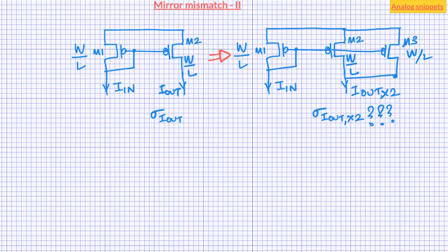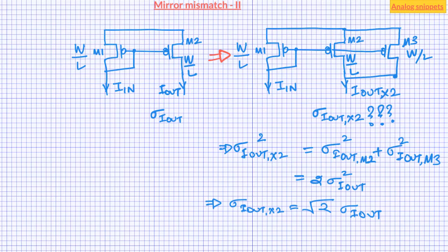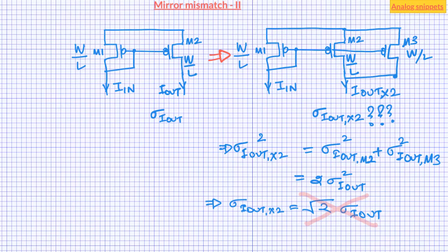When we add two independent random variables their variances add, so from this approach the total spread of the output would be root 2 times the spread of the individual current variation. But unfortunately this answer is incorrect. If we look closely, we realize that even if these two transistors are independent, the currents are not. There exists a certain correlation between the currents of M2 and M3 because of the common bias transistor M1, and as a result variance won't simply add.